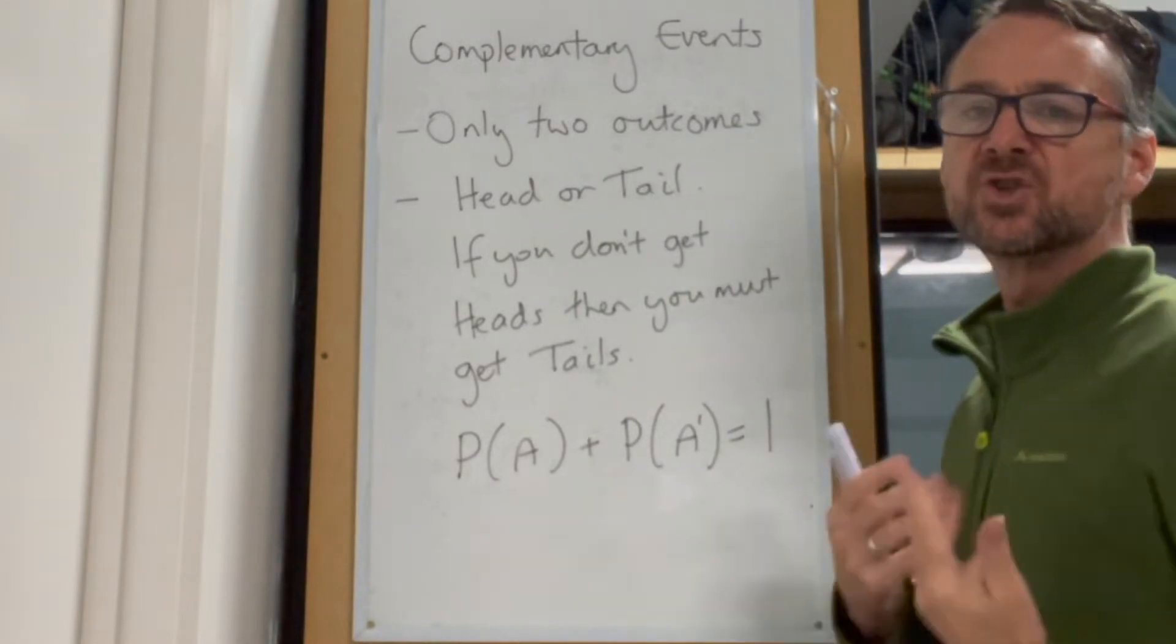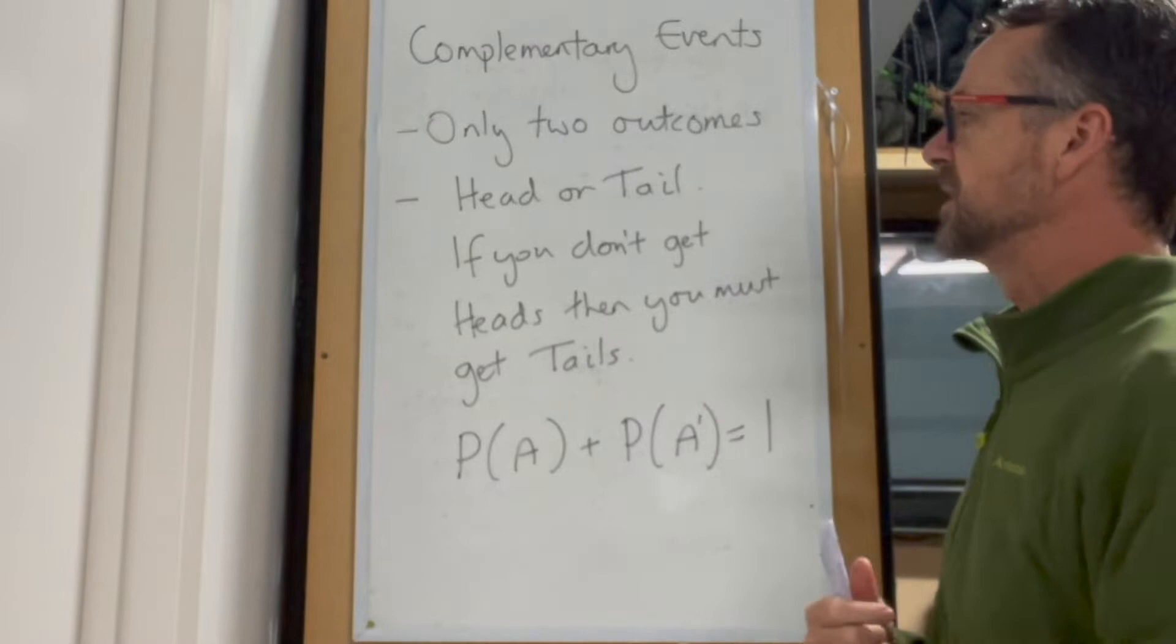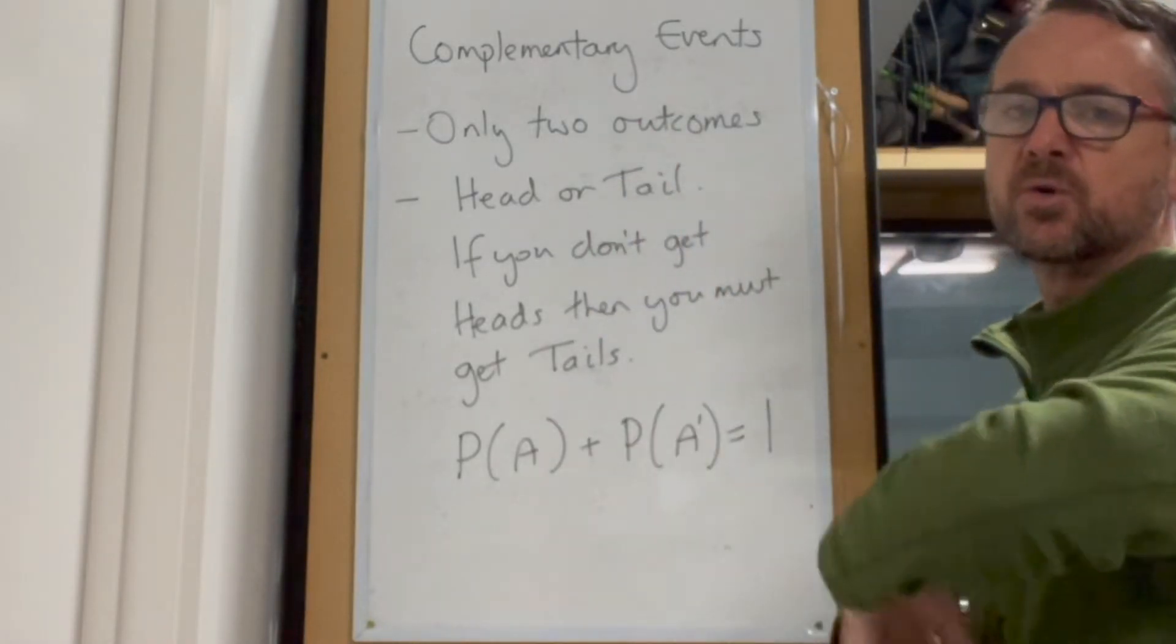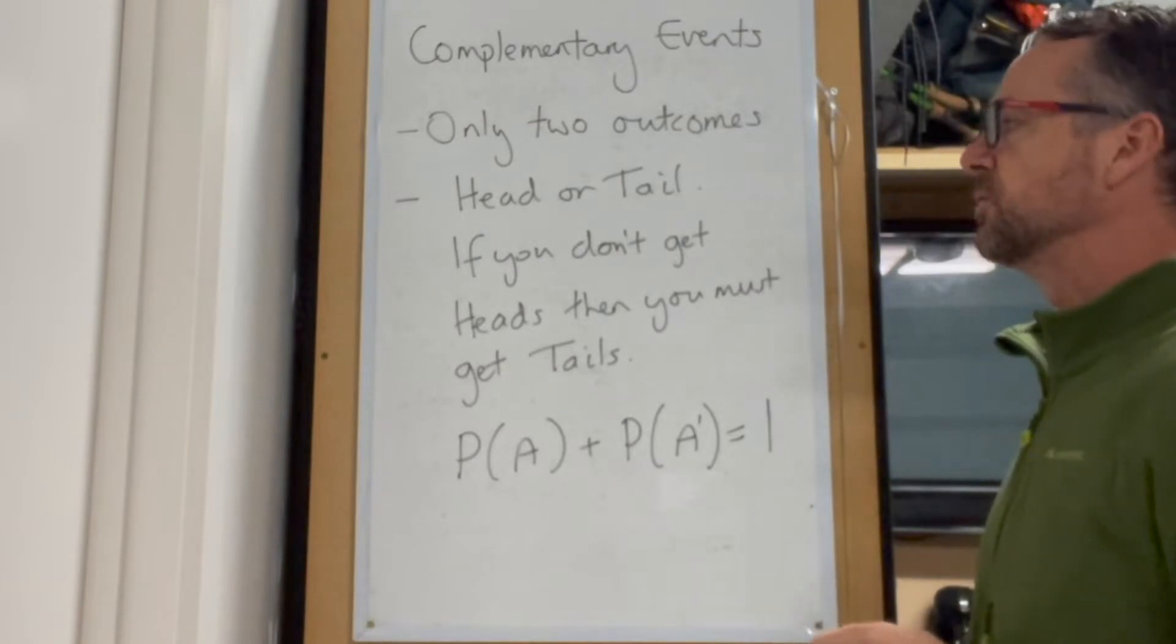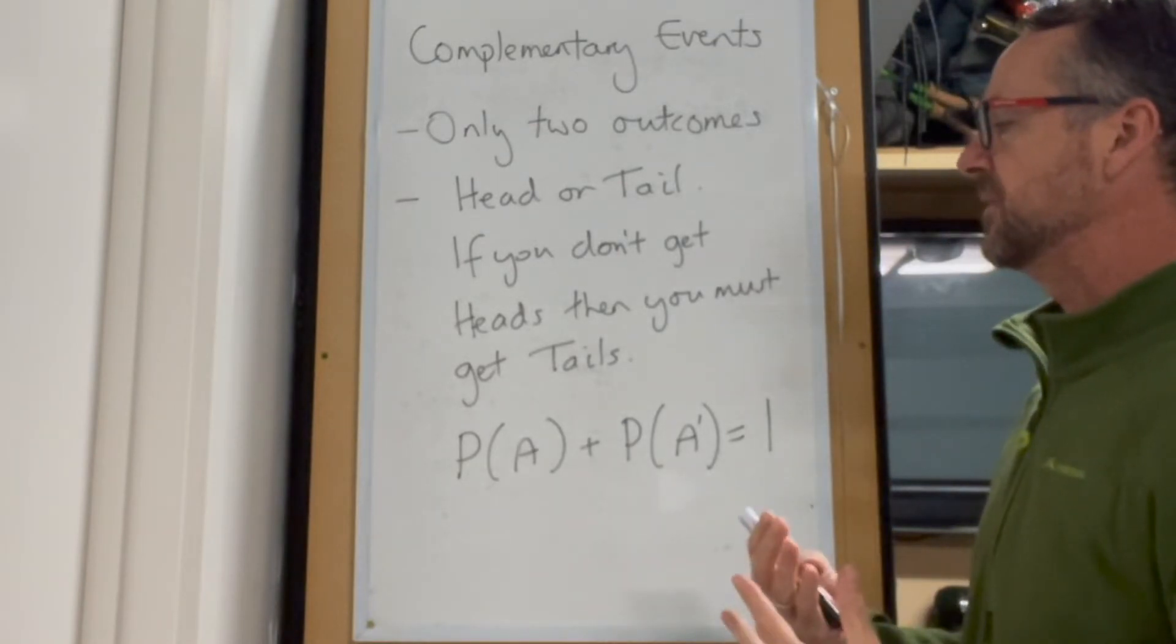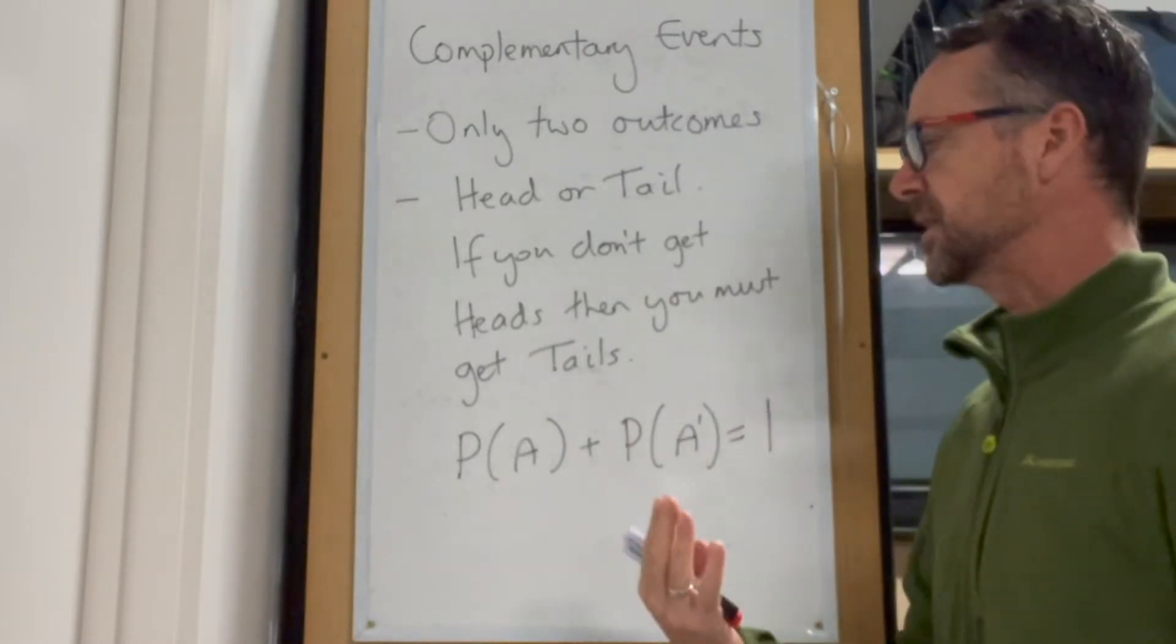So complementary events, this is when there's two outcomes. You could have one outcome, for example tossing a coin. It's either going to be heads or it's going to be tails. You're going to think about that then, that if you don't get heads, then you must get tails.